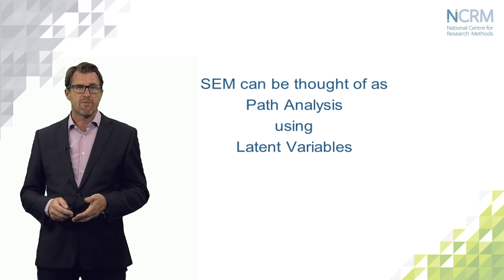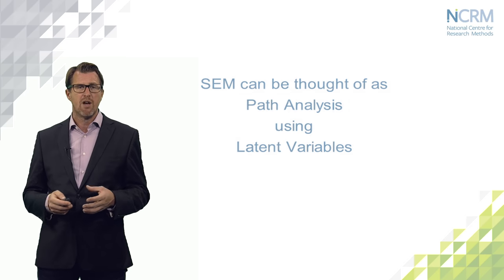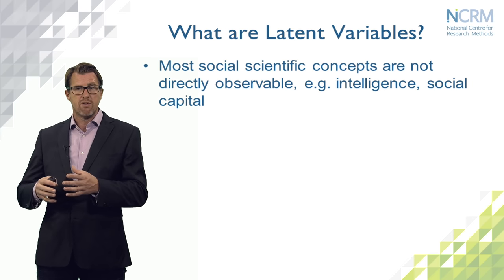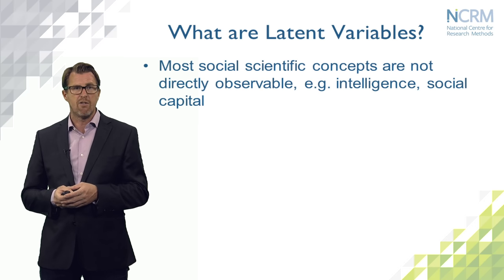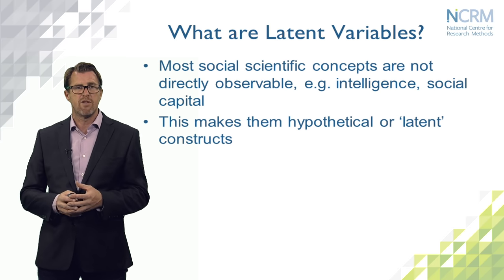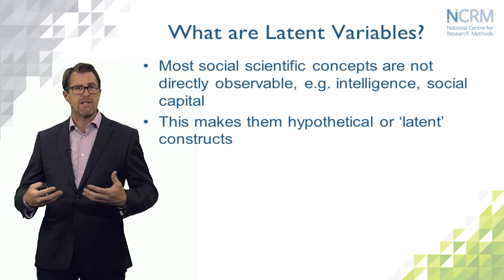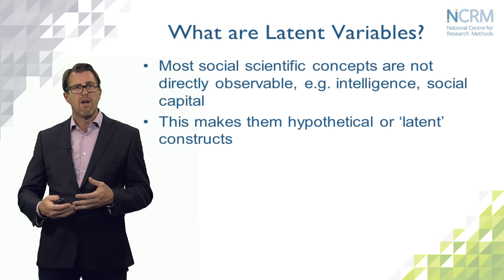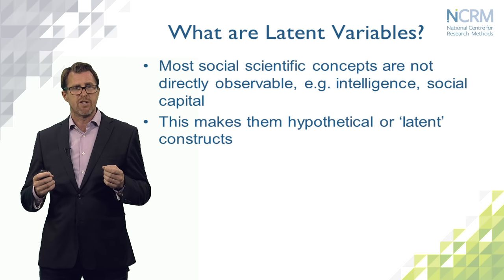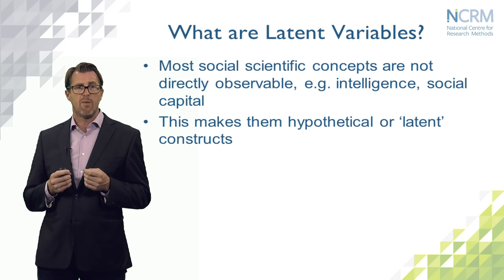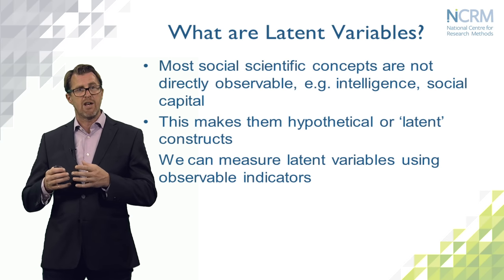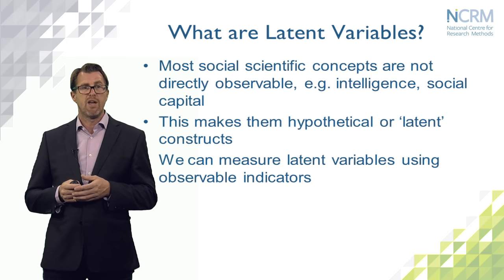What are latent variables? Most of the concepts that we're interested in in social science are not directly observable — things like intelligence, social capital, trust. It's very difficult to put some kind of meter into people and get a direct reading of their level of social capital or trust. This makes these concepts hypothetical or latent. We believe that they are latent within people at some level and that they drive attitudes and behaviour, but we can't actually directly observe them. Fortunately, we can use approaches which measure these latent variables using observable indicators — variables that we can measure directly that we believe to be caused by the underlying latent constructs.